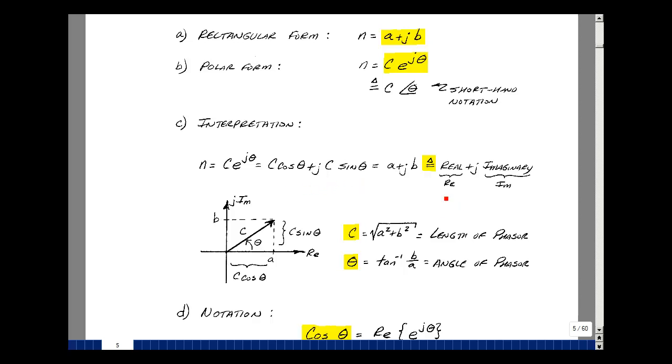We'll use a shorthand notation of re for real and im for imaginary. We can also show this graphically by using an x-axis that's real and a y-axis that's imaginary. So here we have a phasor, which has a length of c and has an angle of theta with respect to the x-axis. In algebra, we had a way to express the y-axis and the x-axis if we knew the length and the angle.